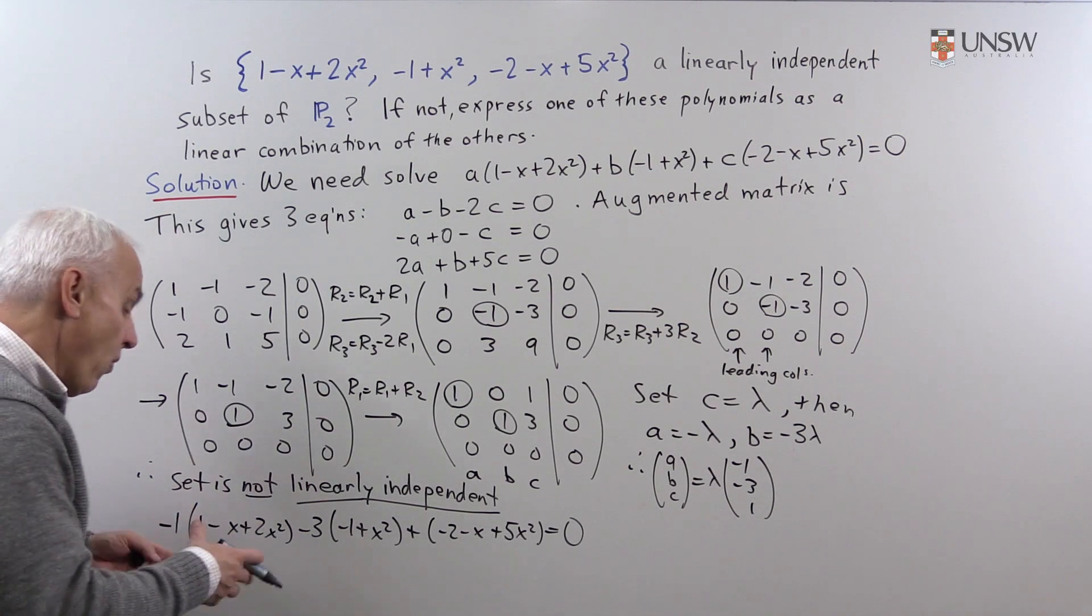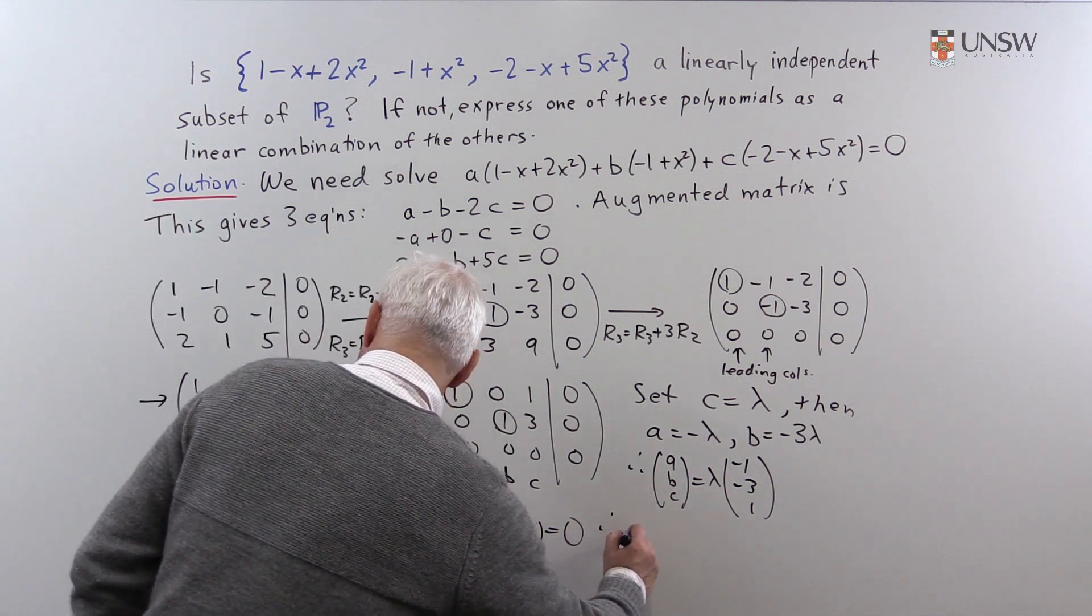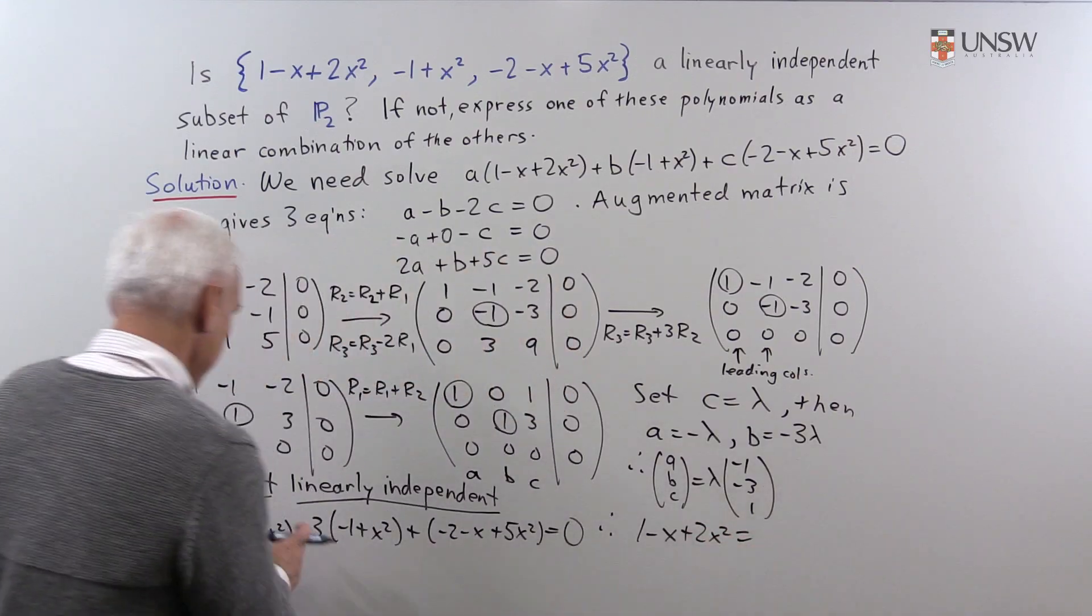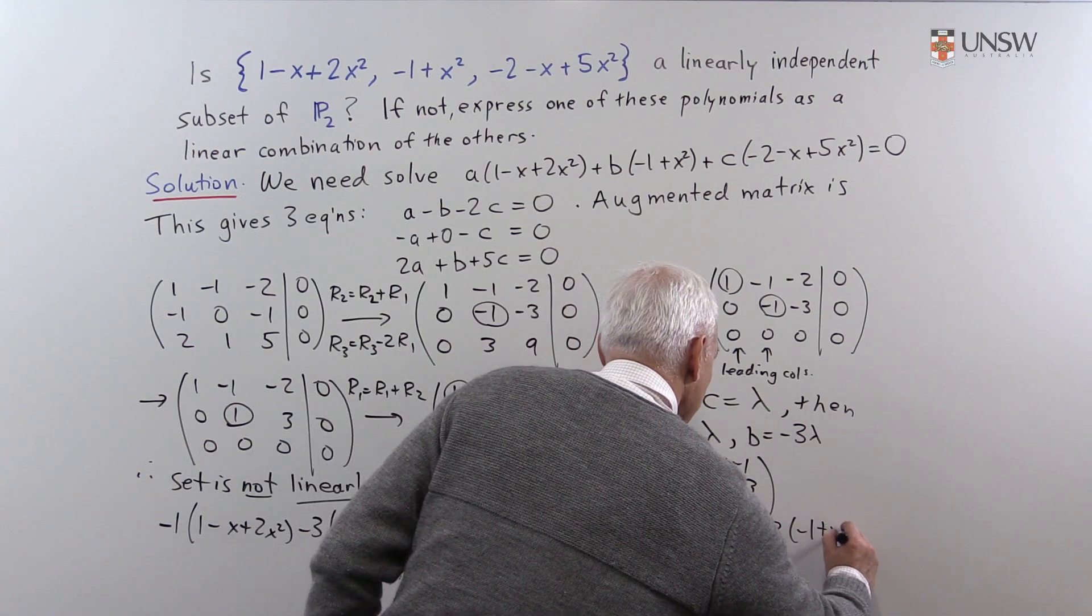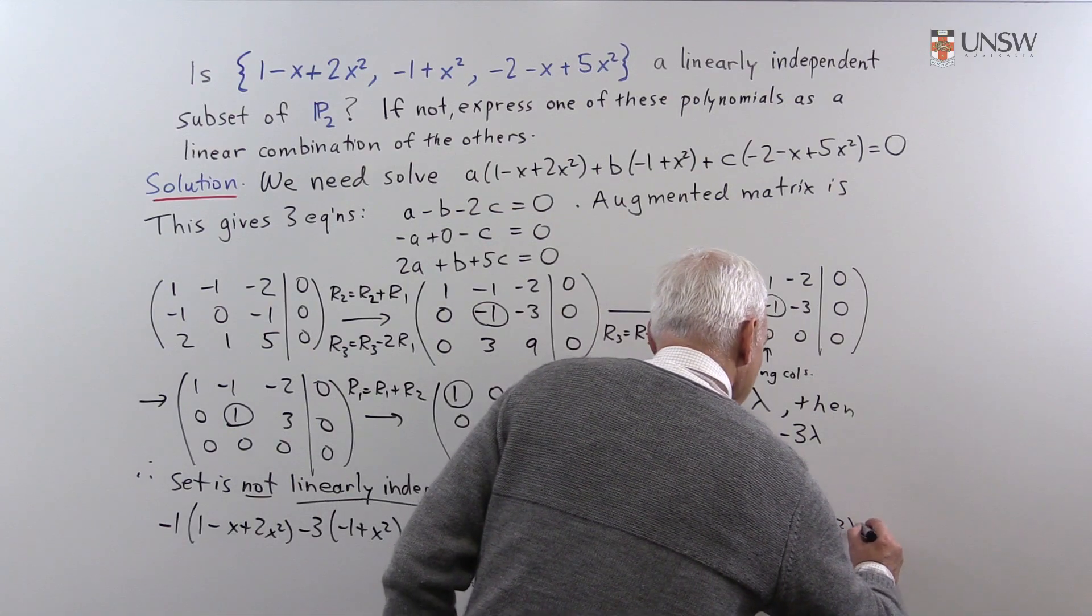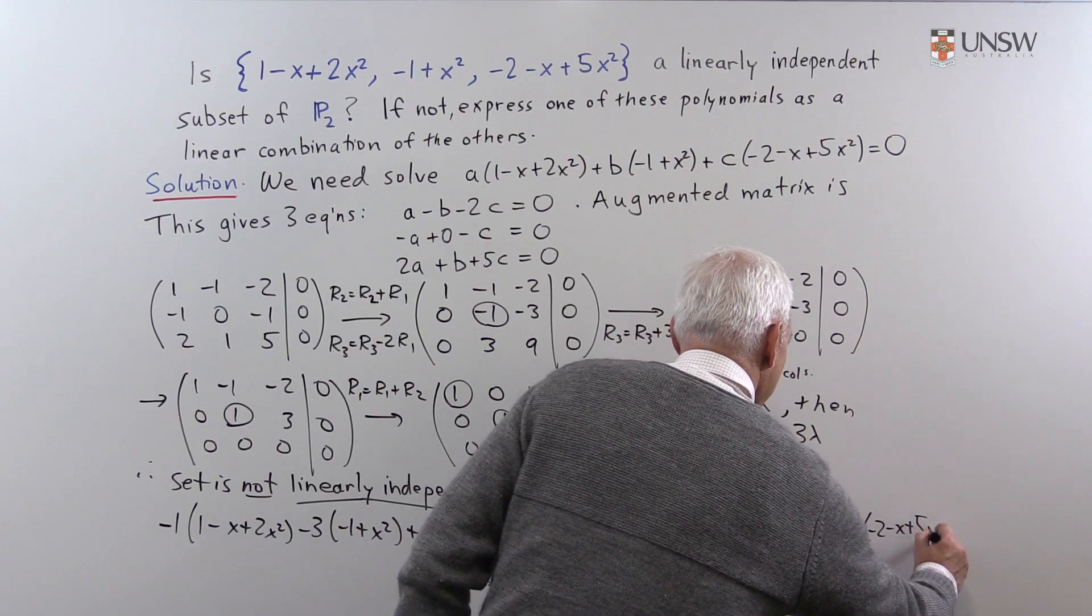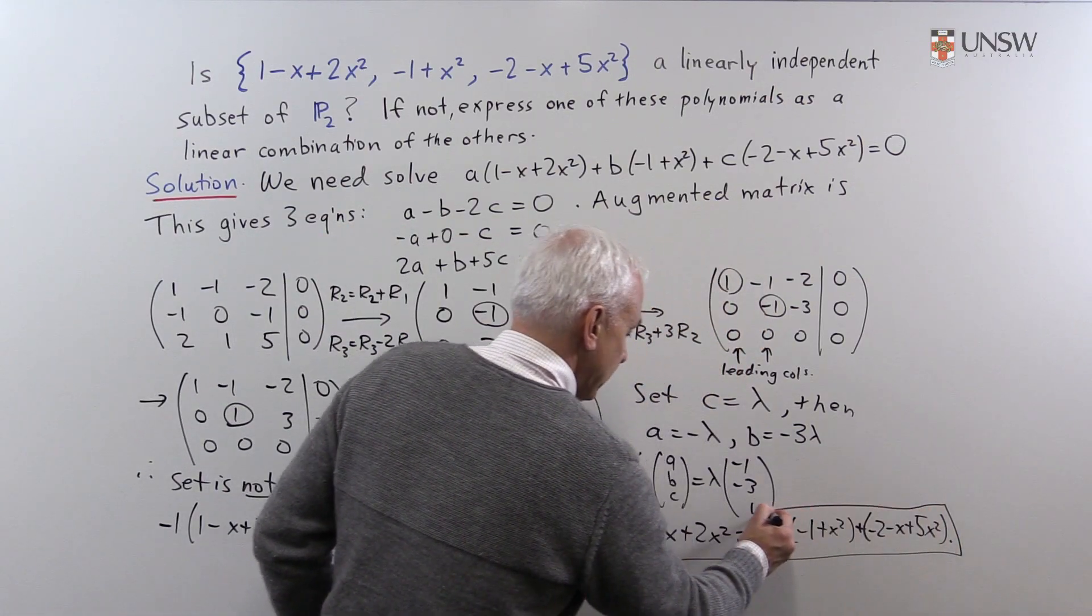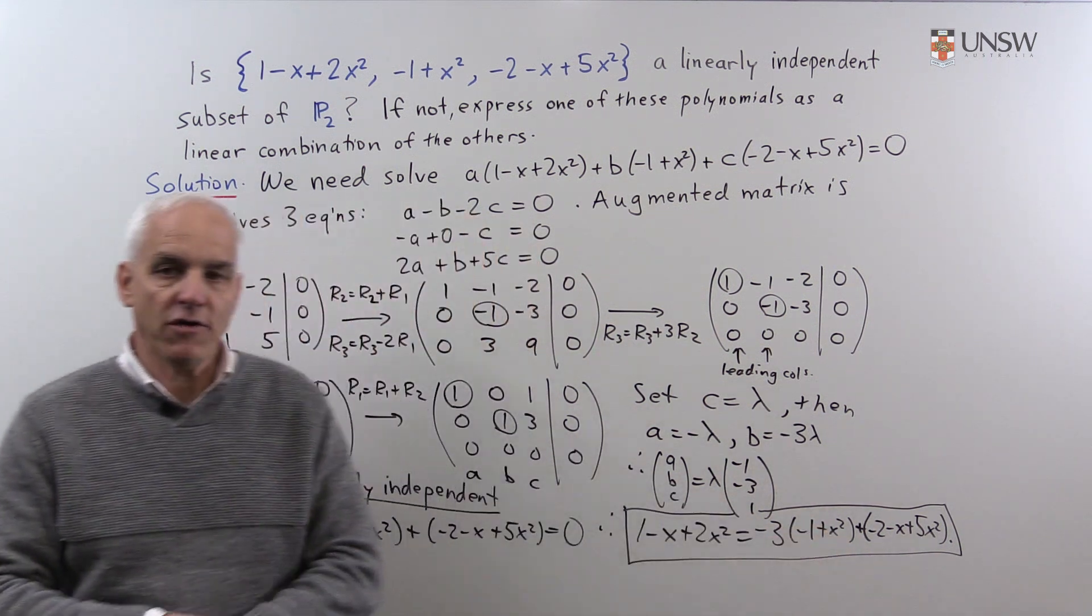And if we actually want to write one of them as a linear combination of the other, it's just a question of moving one of these to the other side. So, let's move this one to the other side. So, therefore, for example, we could write (1 - x + 2x²) equals, this is on the other side, so -3 times (-1 + x²) plus (-2 - x + 5x²). Okay, and that's a relation that's satisfied expressing one of the polynomials as a linear combination of the other two.